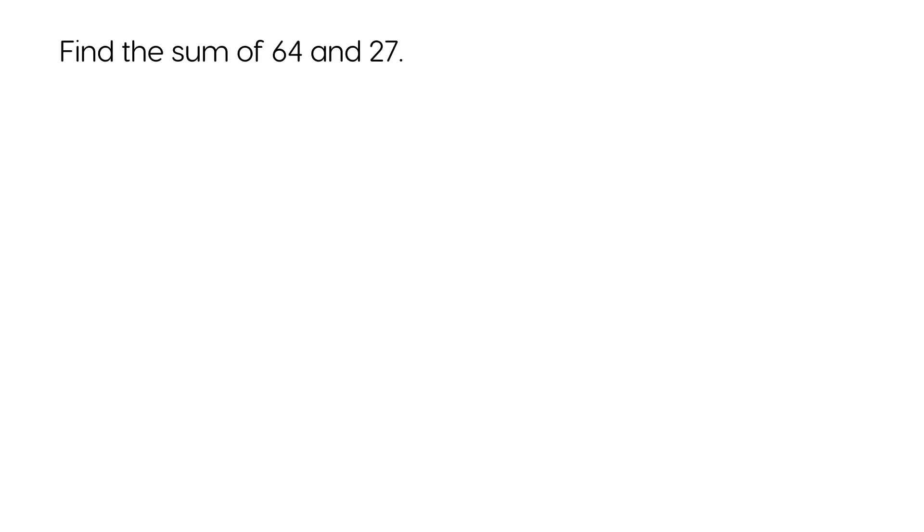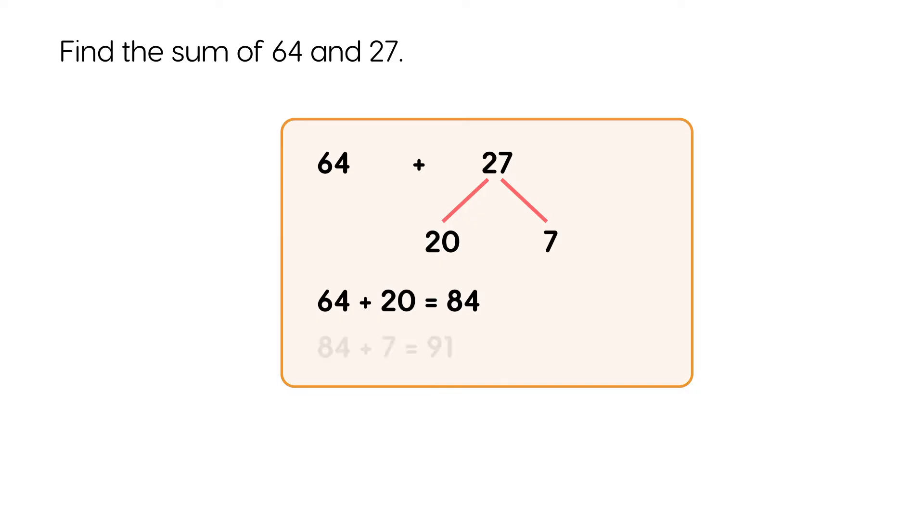Find the sum of 64 and 27. 64 plus 20 equals 84. 84 plus 7 equals 91. 64 plus 27 equals 91. The sum of 64 and 27 is 91.